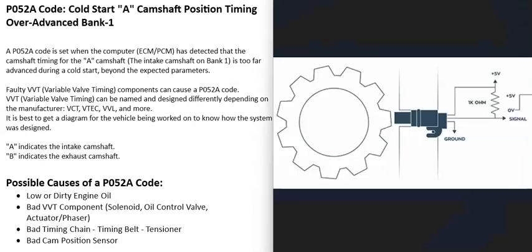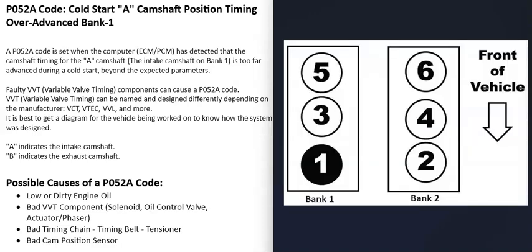There's a camshaft position sensor that monitors the camshaft as it spins and reports this information back to the computer. When the engine is cold, the sensor is reporting that the timing is more advanced than it should be. If you have a V6 or V8 engine, bank one is always the side with the number one cylinder — google your engine's cylinder location to find it. Bank two is the opposite side, and if you have a four-cylinder engine, you'll only have one bank.